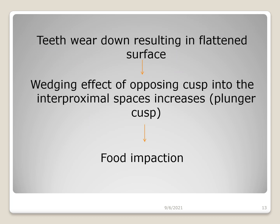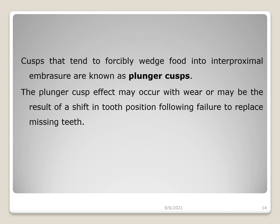When teeth wear down resulting in a flattened surface — due to attrition or physical trauma — it causes a wedging effect of the opposing cusp into the interproximal spaces. This cusp is known as a plunger cusp. The opposing tooth cusp acts on the flattened tooth and leads to occlusal food impaction. A cusp that tends to forcibly wedge food into the interproximal embrasure is called a plunger cusp.